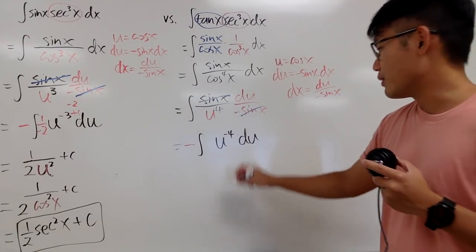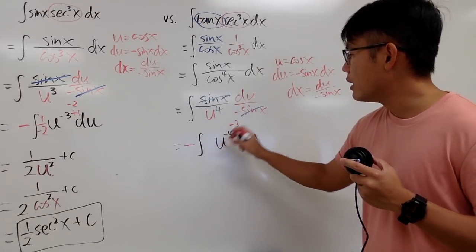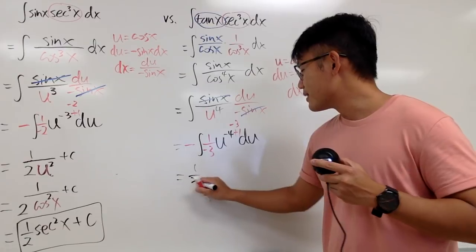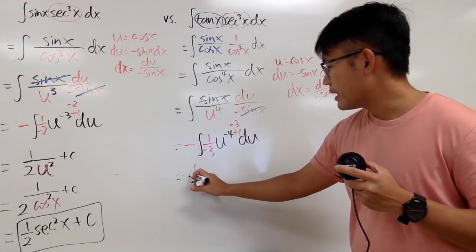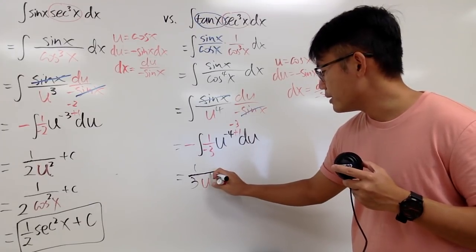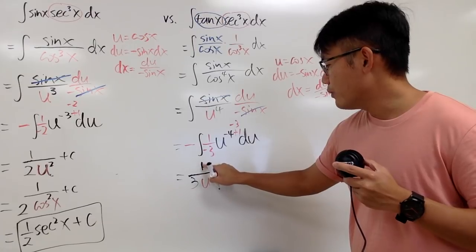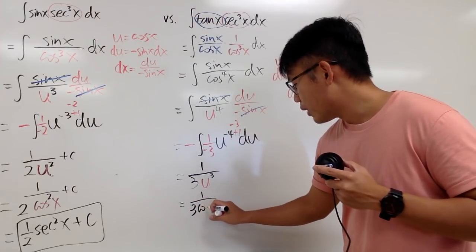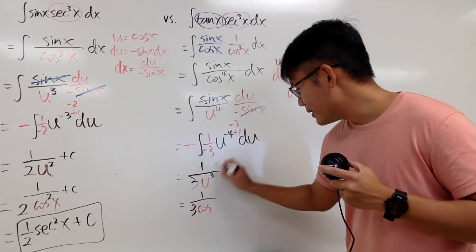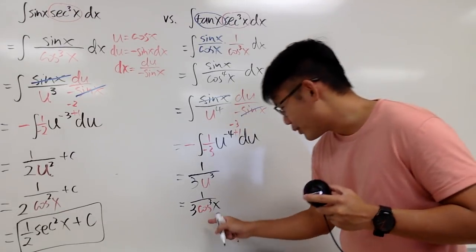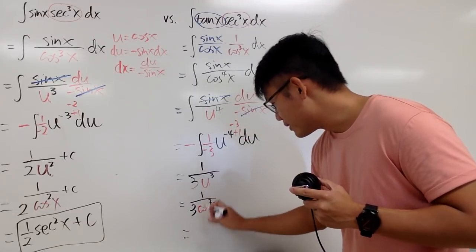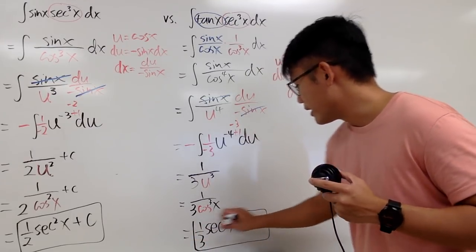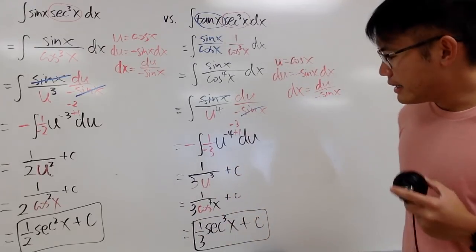We have the negative out front and the integral of u to the negative 4 power du. Adding 1 to the exponent gives negative 3, divided by negative 3, so the two negatives make positive one-third, and we have u to the negative 3 power, written as 1 over u cubed. Substituting cosine x back in gives 1 over 3 cosine cubed x, which equals one-third secant cubed x plus C.